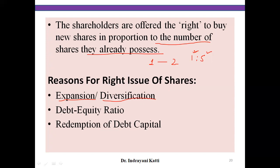The second reason is the debt equity ratio. The company needs to properly balance the debt equity ratio because there is a standard ratio. If the company's debt equity ratio does not match the standard — for example, if the standard ratio is two-to-one and the company exceeds that — the company becomes overburdened with debt. To balance it, the company can issue equity shares through a rights issue to restore the debt equity ratio.